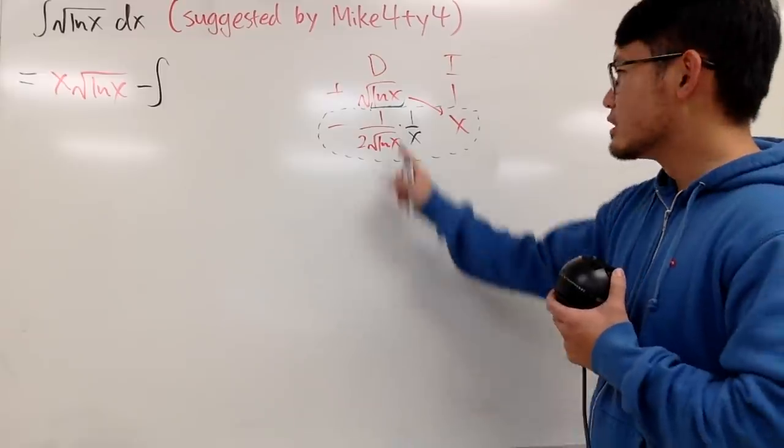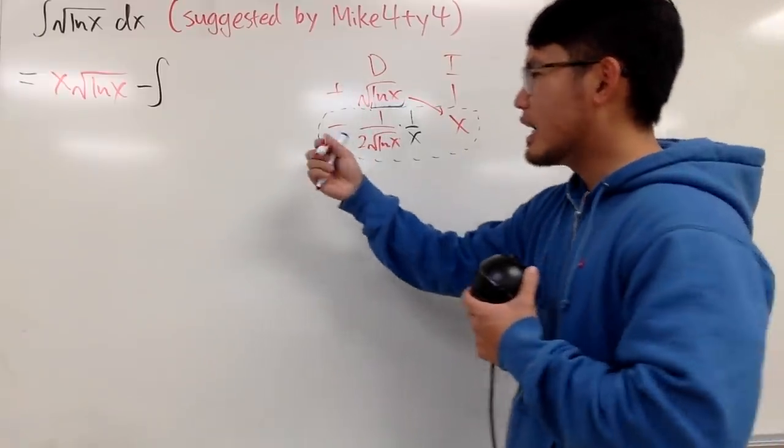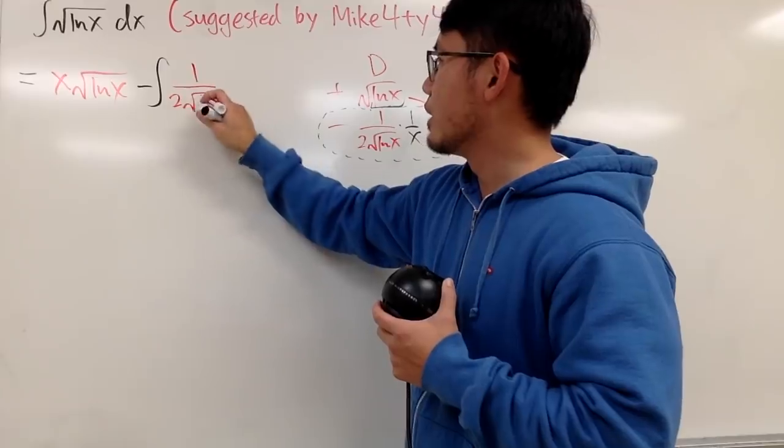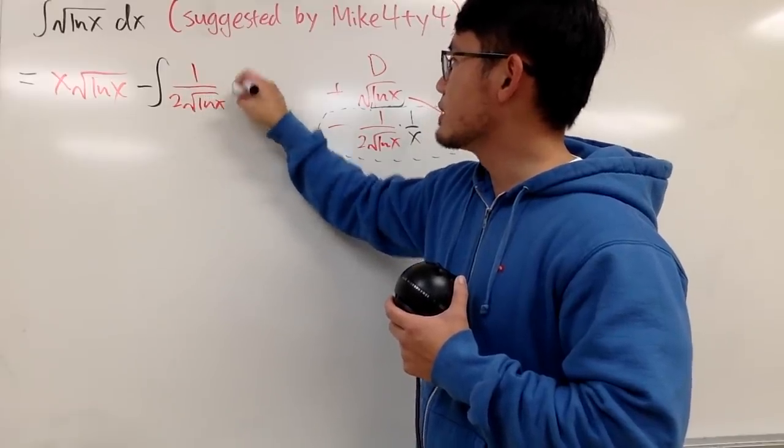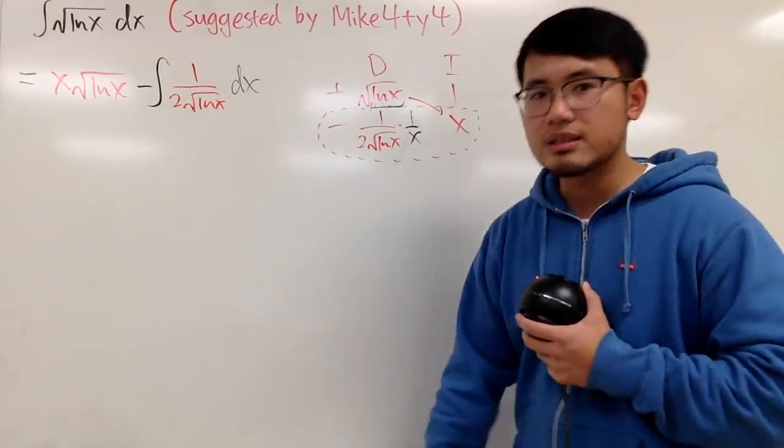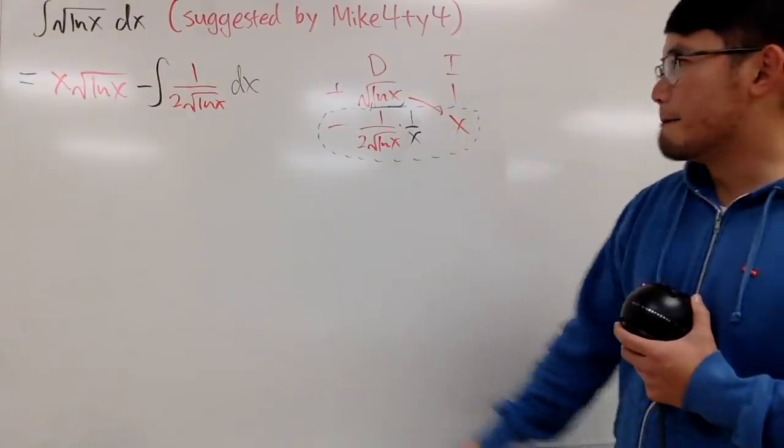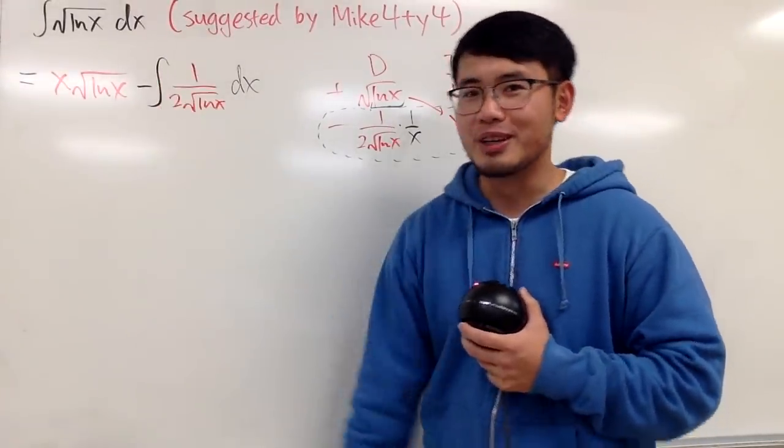Just canceling in your head. So we just have this left inside, 1 over 2 square root of natural log of x. And now, of course, this is with the dx. Now, this is not anything better than the original, huh?